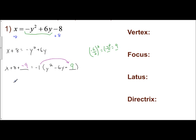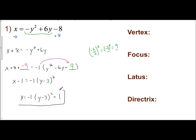8 minus 9 is negative 1, so I have x minus 1 equals negative 1 times the quantity — and what did I square to get 9? I squared negative 3, so it's y minus 3. Solving for x, I get x equals negative 1 times y minus 3 squared plus 1. That is my standard form for this horizontal parabola. I identify my a, h, and k values: a is negative 1.